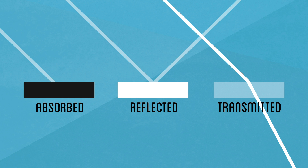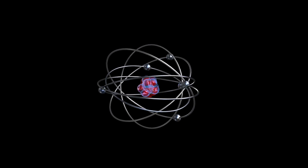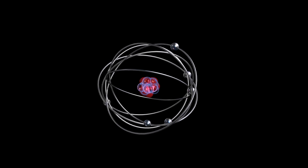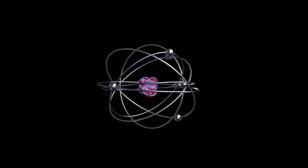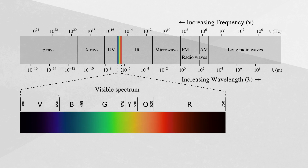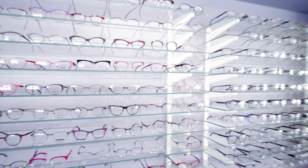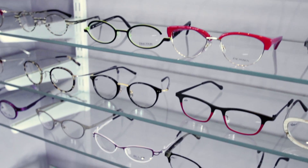What determines if a photon can pass through has to do with the specific electron energy bands of the atoms in the material and the wavelength of the photon. If the photons don't interact with these electrons and these specific energy bands, they can pass through unimpeded.